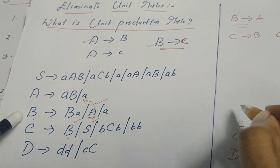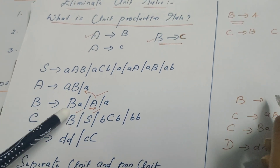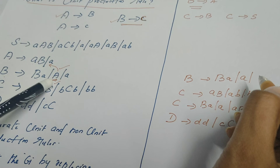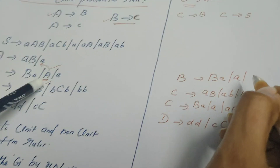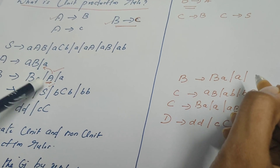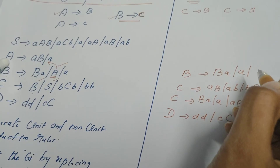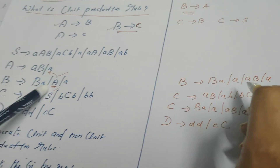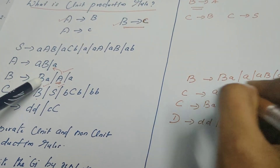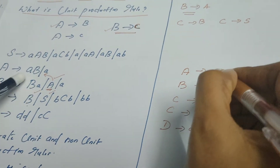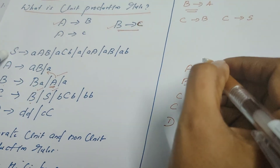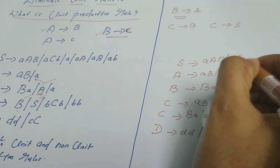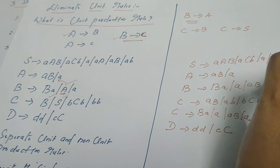Now we have written D and C. Let us write B. B derives BA — let me write as it is, including the terminal. Now this A in B's rule is a unit production rule, so we should not rewrite A directly. Instead, we go and check what is defined for A. A can be rewritten as AB | A. So I replace this A with AB | A in B's rule. The B production rule is now done. For A, A derives AB | A — there is no change in this rule.